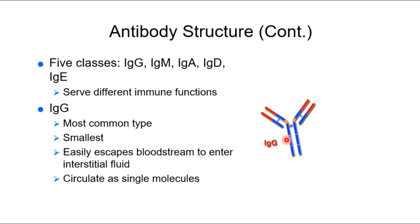You have five classes of antibodies, which will be significant to you in terms of lab results, so you need to know all five. They all have some similarities in terms of what they're capable of. When you have a long list where everything is similar, focus on the differences. We'll start with IgG, which is the most common antibody — just like neutrophils are your most common white blood cell.